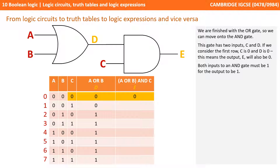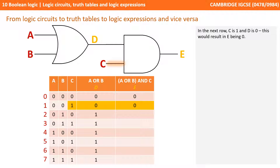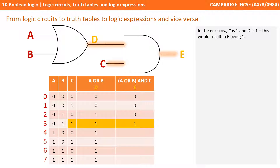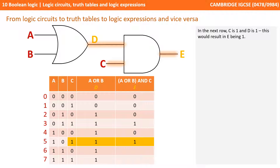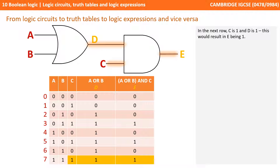We're finished with the OR gate, so we move on to the AND gate. This gate has two inputs: C and D, which we've just worked out. Both inputs to an AND gate must be 1 for the output to be 1. Working through the rows: 0 AND 0 = 0; 1 AND 0 = 0; 0 AND 1 = 0; 1 AND 1 = 1; 0 AND 1 = 0; 1 AND 1 = 1; 0 AND 1 = 0; and finally 1 AND 1 = 1.